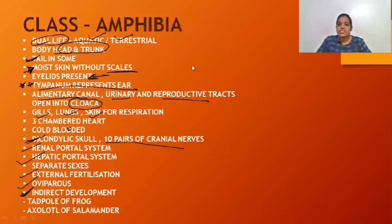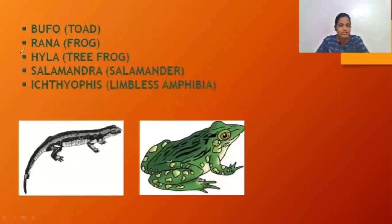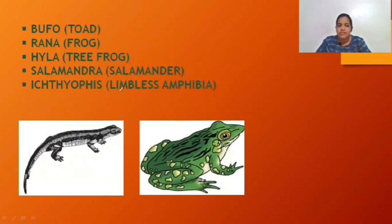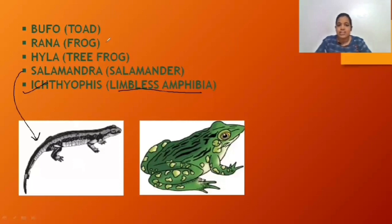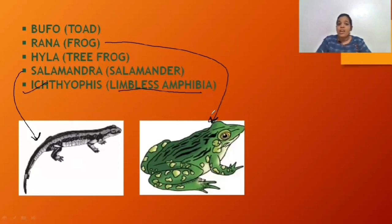Important examples of Amphibia: Bufo (toad), Rana tigrina (the scientific name of the common frog), Hyla (tree frog), Salamandra (salamander), and Ichthyophis (limbless amphibia — a worm-like structure without limbs). Pictures shown are of salamander and Rana tigrina — the frog, which you can easily find in your neighborhood during rainy seasons.